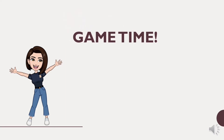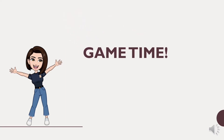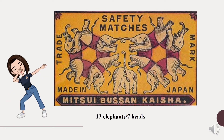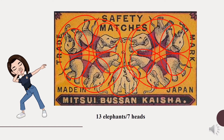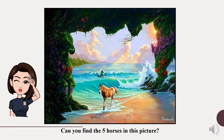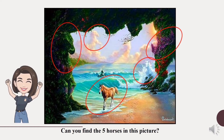Before we start, let's have a game first. Can you find 13 elephants in the picture? Congratulations! You found the 13 elephants in the picture. Let's have another example. Can you find the 5 horses in the picture? Congratulations! You found the 5 horses in the picture.